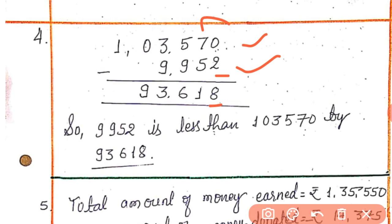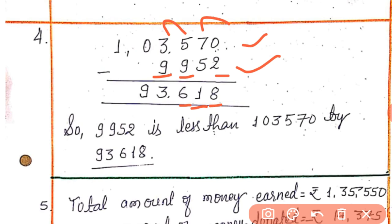Now it is 6 tens; 6 tens minus 5 tens equals 1. From 500, we have to subtract 900 — we can't subtract, so it takes 1 borrow. Now 1,500 minus 900 equals 600. From 2,000 we can't subtract 9,000, so we borrow again to give to the 1,000s place. Now it is 13,000; 13,000 minus 9,000 equals 3,000. We write 3 under the thousands column, and then 9 in the ten-thousands column. The difference is 3,618. So 9,952 is less than 13,570 by 3,618.